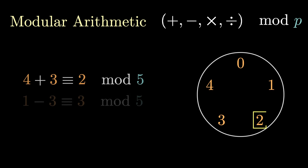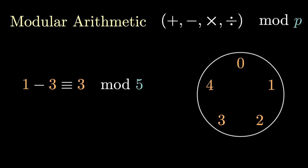This also gives us an intuition for what subtraction would do. Let's try one minus three. Starting at one, we move three steps counterclockwise, giving us three. You can also think of subtraction as adding the additive inverse of a number. This would mean changing one minus three to one plus negative three, where negative three is the additive inverse of three. But what exactly is negative three mod five?